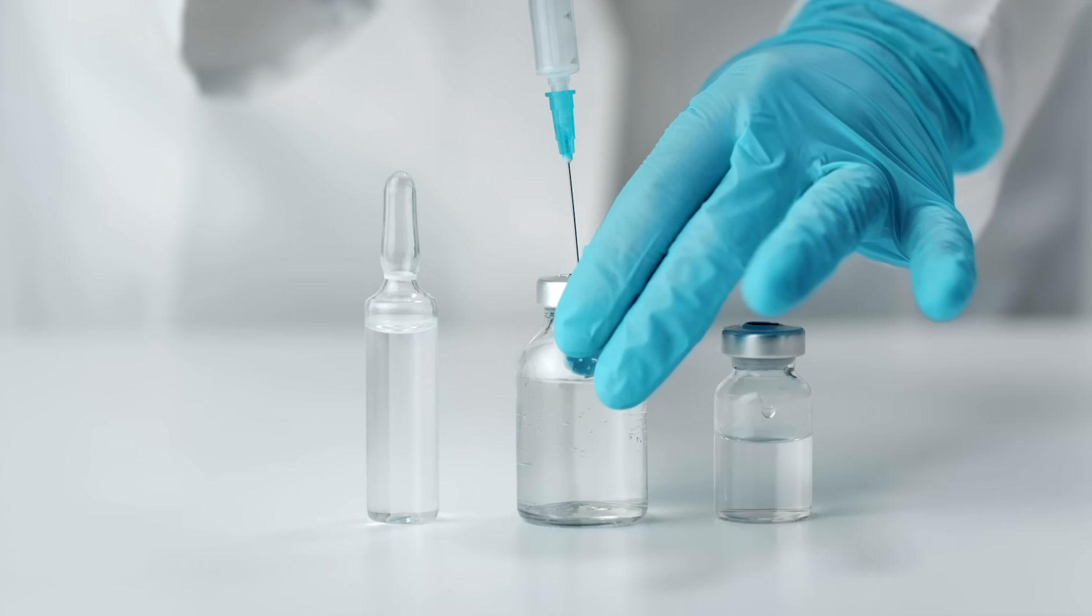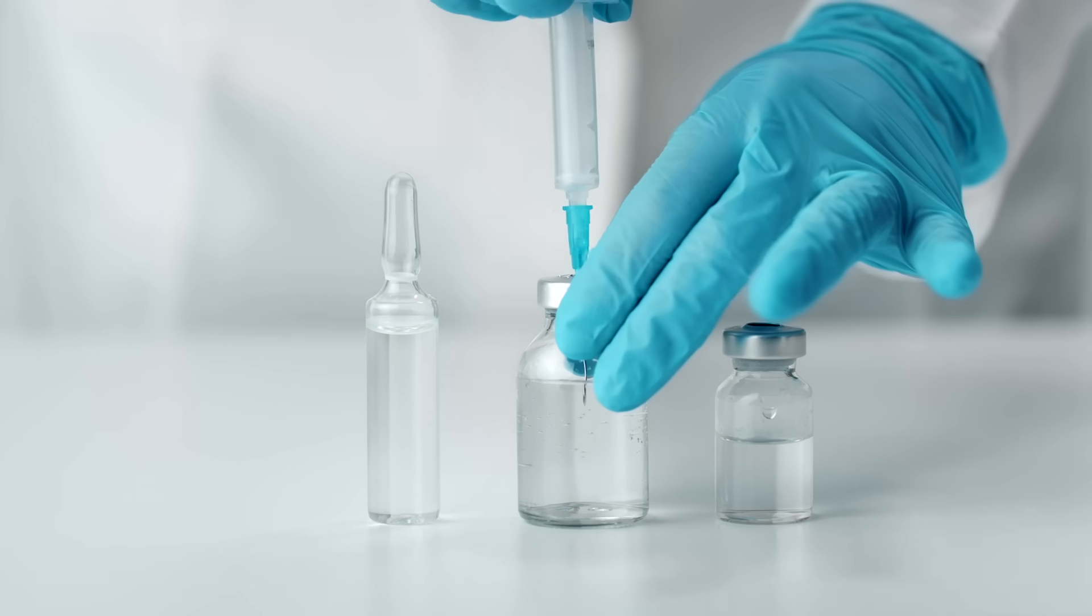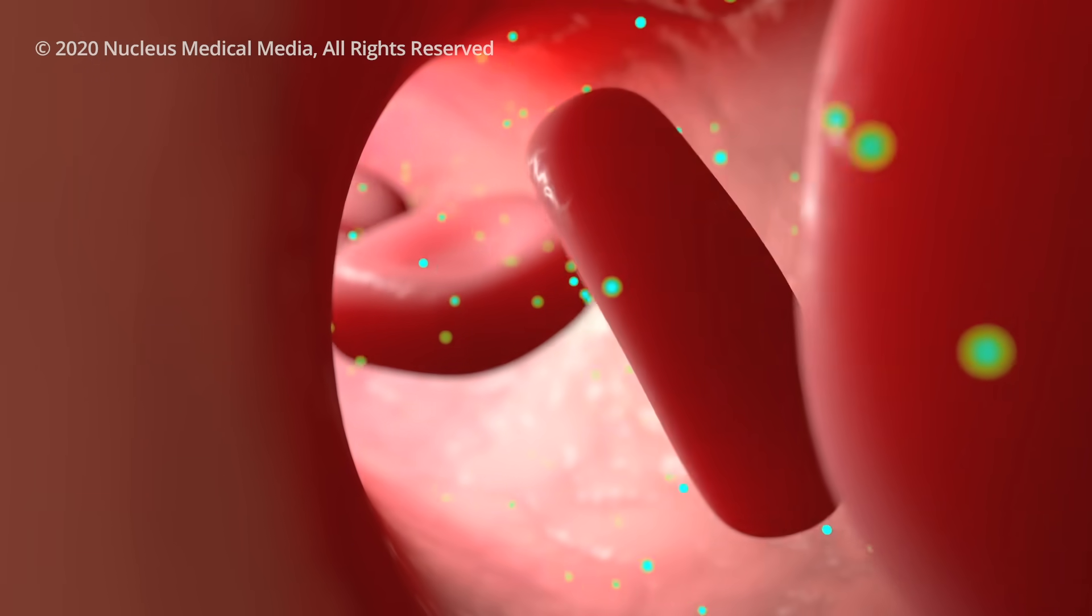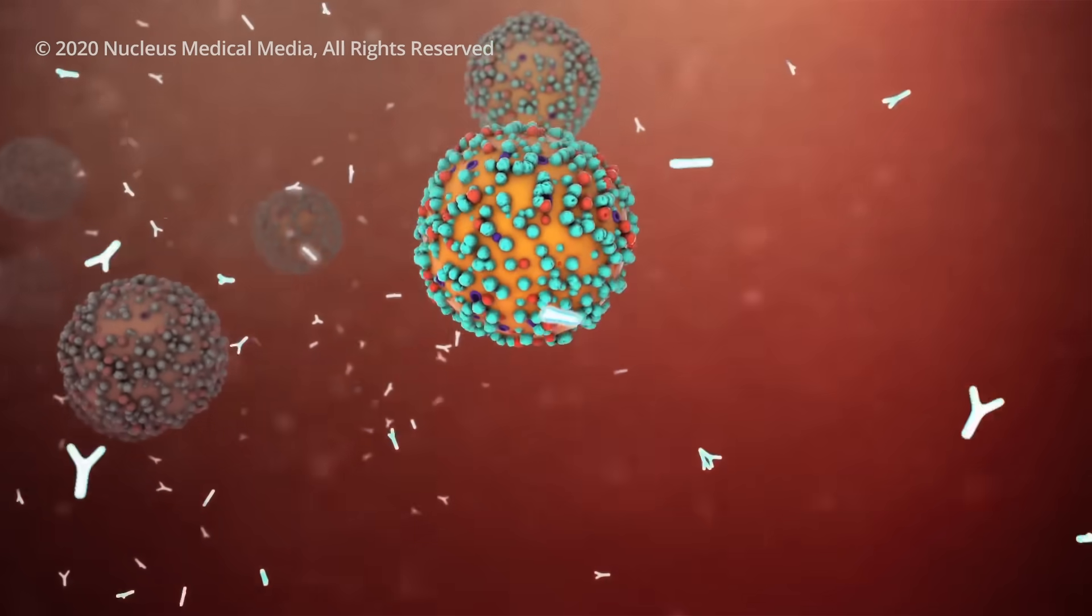The basic idea is that you would get a shot that contains faint versions of the virus. The vaccine would expose your body to a version of the virus that is too weak to cause infection, but just strong enough to stimulate an immune response.